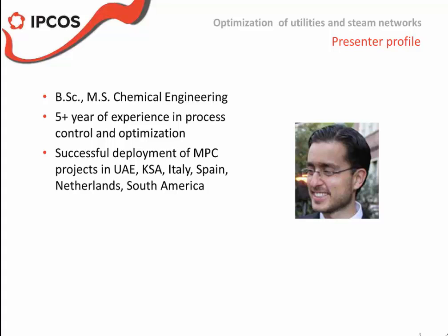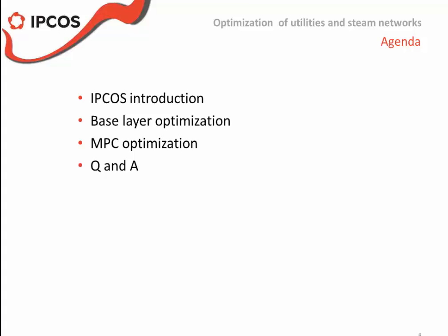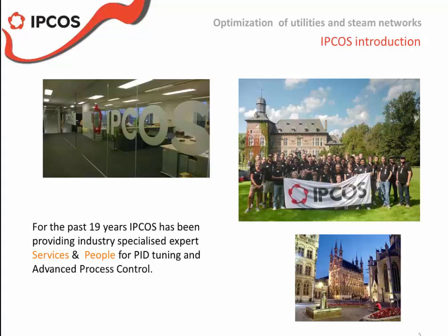Good morning, good afternoon everybody. This is the agenda of the webinar for today. We'll have a brief introduction of what ITCAS is, then we'll go to our topic of interest: the optimization of utilities and steam networks. We'll take two approaches — the base layer, which is DCS optimization, and the MPC/APC optimization. At the end, as Sam mentioned, we'll have a round of questions.